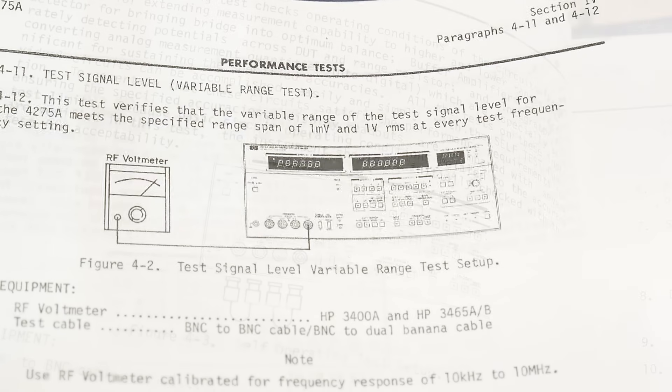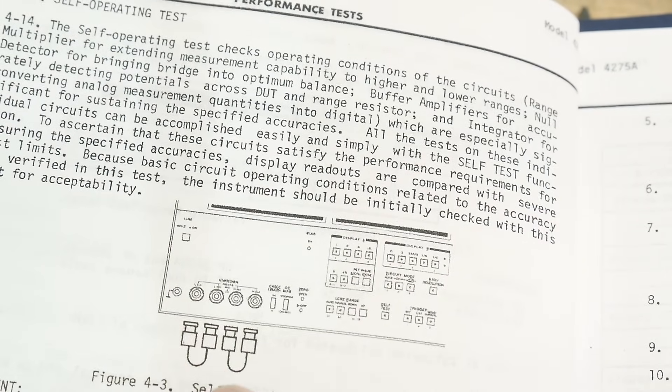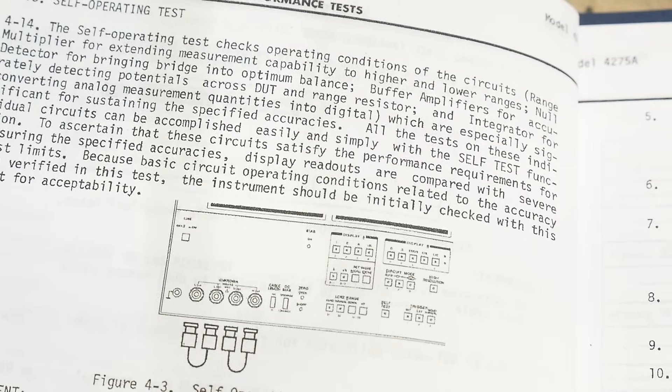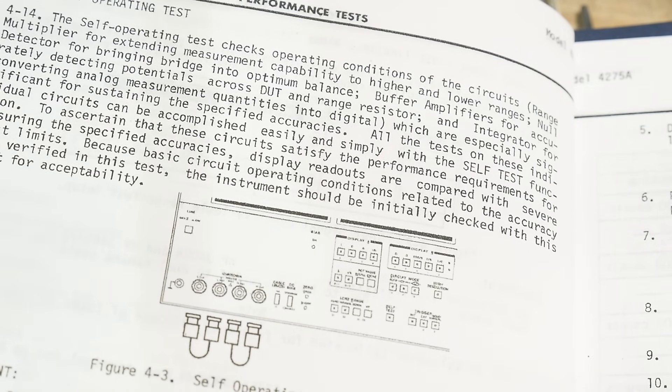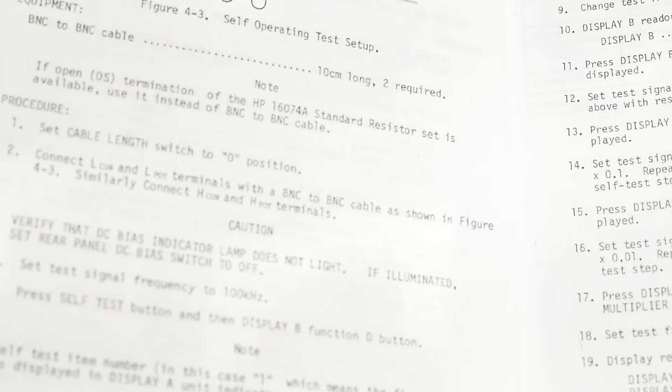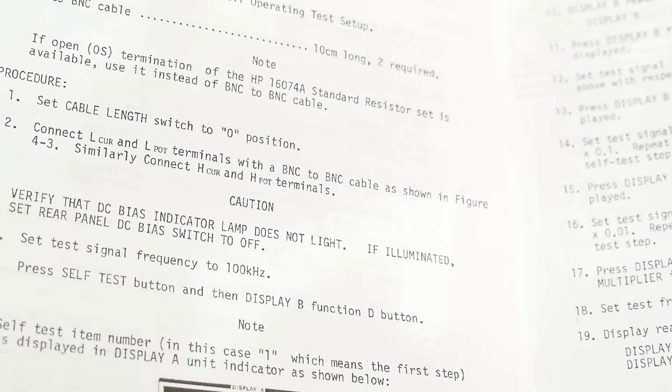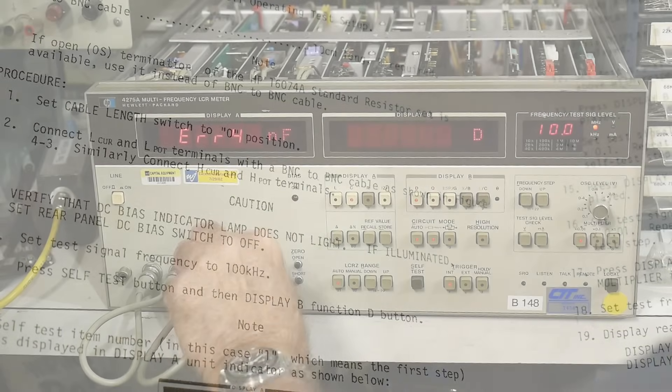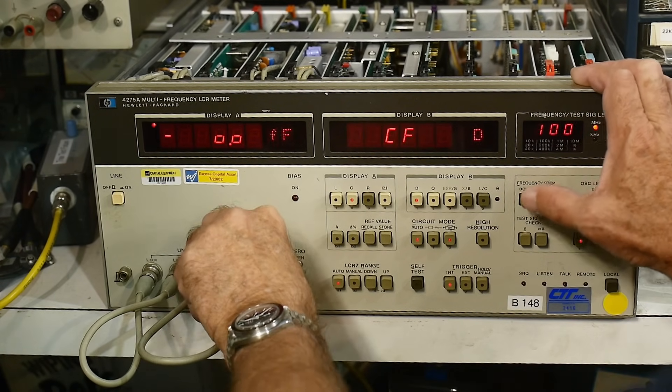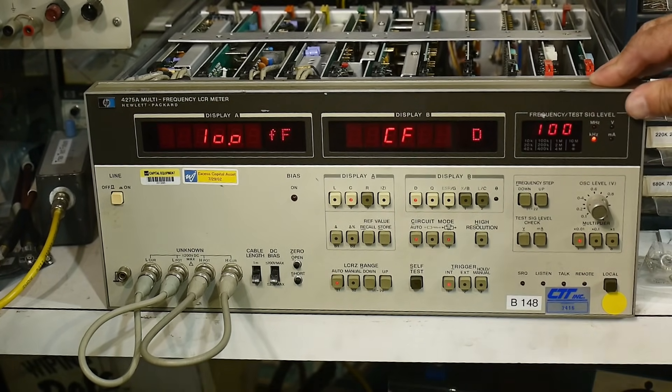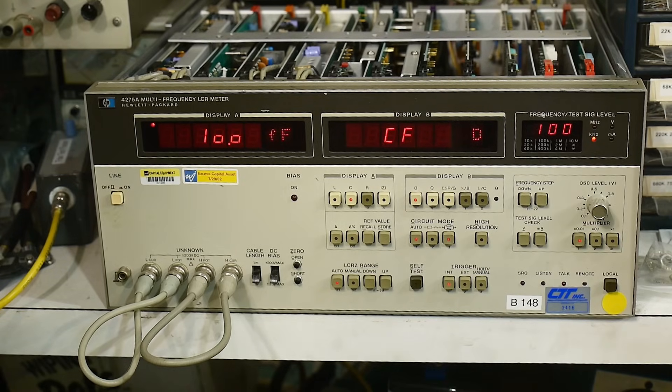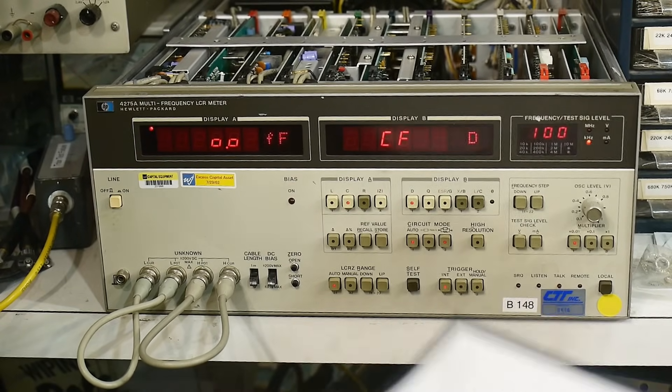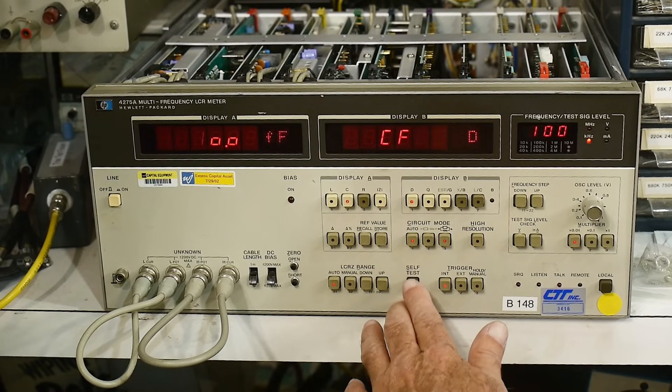Go on to the next test. Self-operating test, we need some BNCs that go like that. Connect cable length is zero, connect terminals with BNCs like that, test frequency to 100 kilohertz. Press the self-test, and then the B button, function D button. Let's hook this thing up. 100 kilohertz, it said.